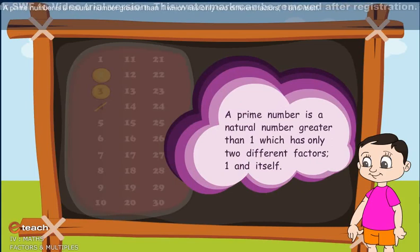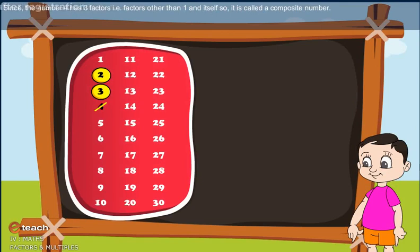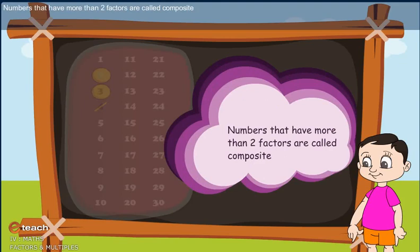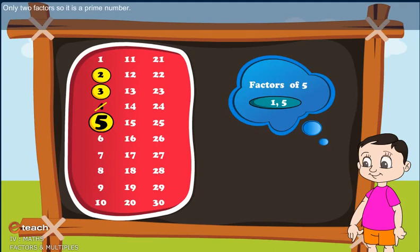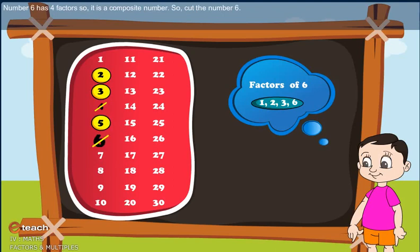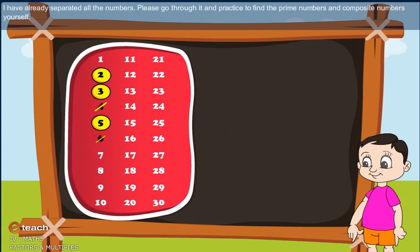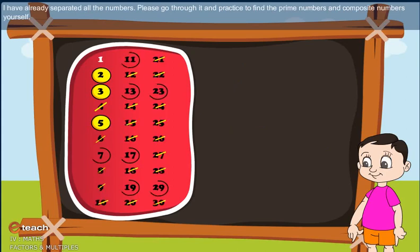Now I explain why we circle some numbers and cross out others. Numbers 2 and 3 have only 2 factors — 1 and the number itself — so they are called prime numbers. A prime number is a natural number greater than 1 which has only 2 different factors: 1 and itself. Since number 4 has 3 factors — factors other than 1 and itself — it is called a composite number. Numbers that have more than 2 factors are called composite. Let's separate other numbers also.